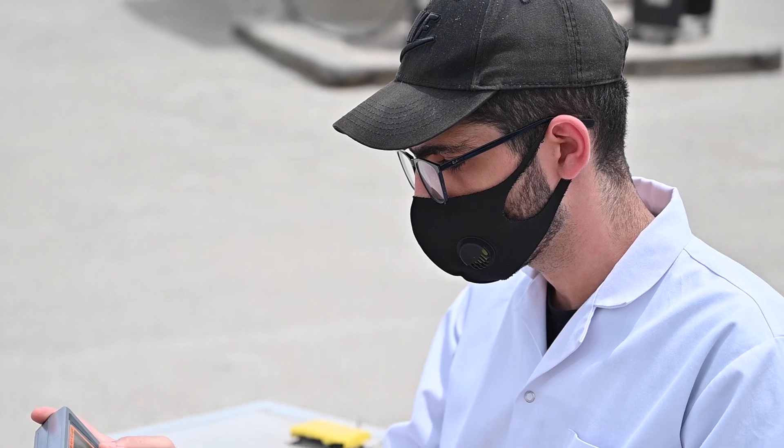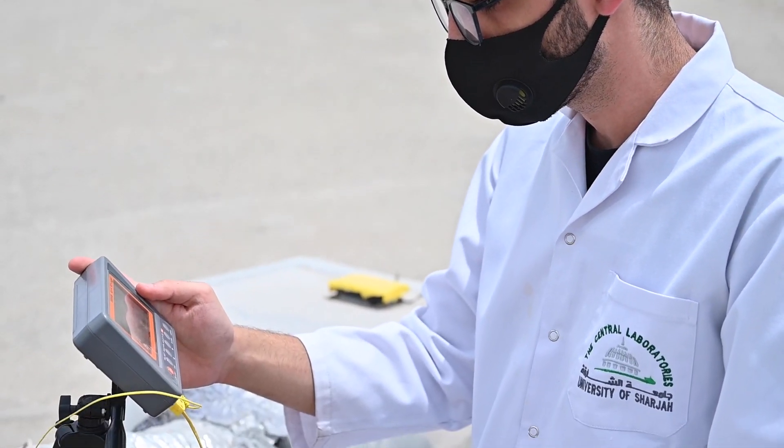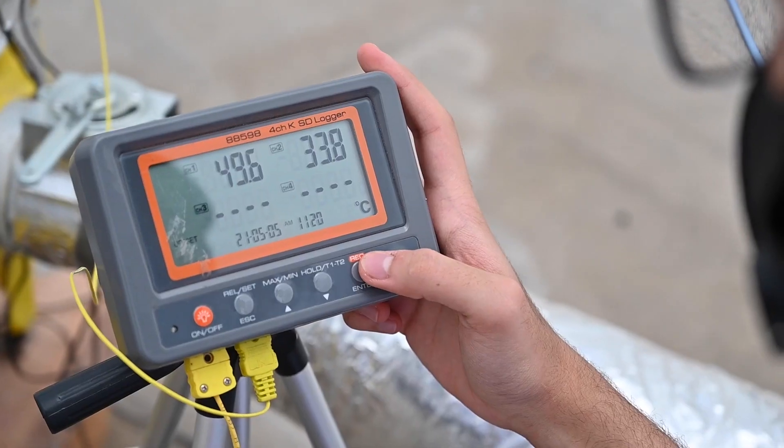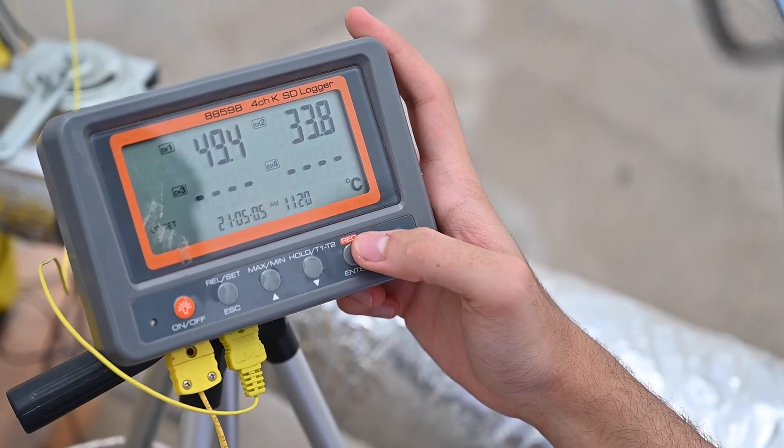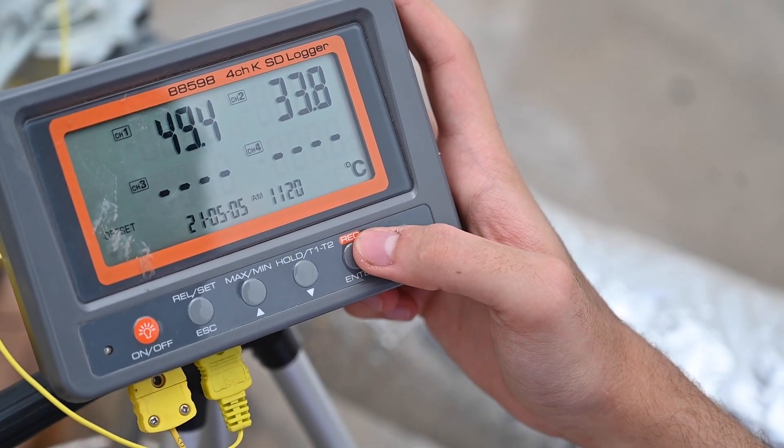The thermocouples are used to measure the ambient temperature, basin temperature, and glass temperature. Also, the power meter will measure the energy consumption of the transducers.